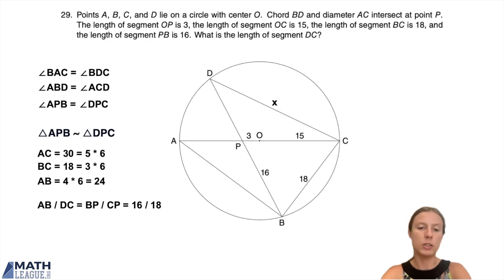Awesome. So now we have our ratio of similarity, which is 16 to 18. And we can write down a little equation with X in it. Because the ratio of all the pairs of sides are going to be the same. That's what it means for them to be similar. Which means 24 to X, that's AB to DC, is the same as 16 to 18.